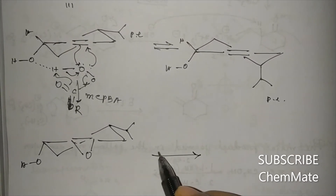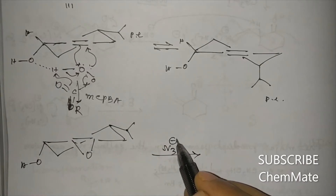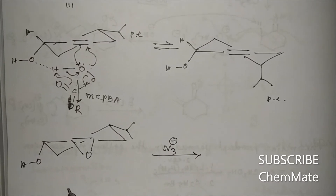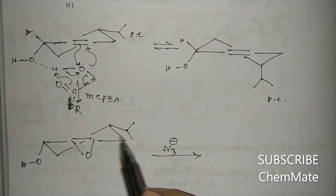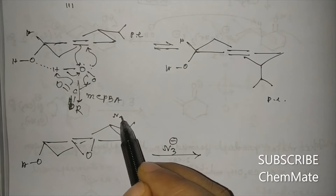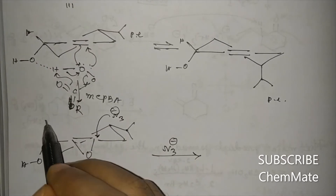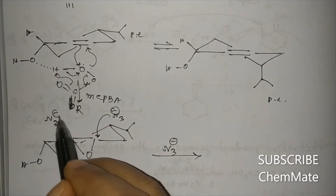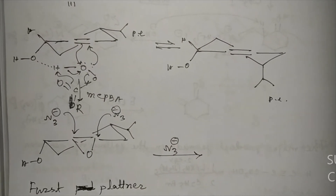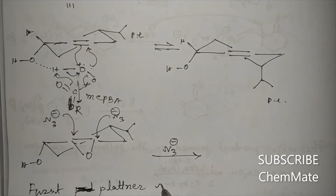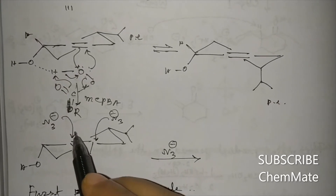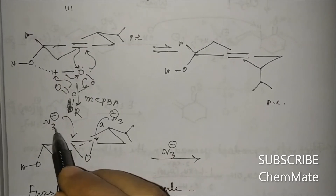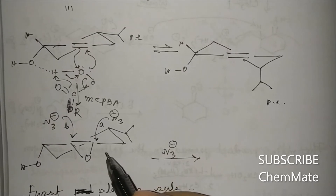When treated with NaN3, the azide ion (N3 minus) will open up the epoxide ring. N3 minus may attack at two positions — let's call them attack A and attack B. Which attack will be preferable can be predicted by the Fürst-Plattner rule. Let's consider what happens in each case: from attack A, what will happen?